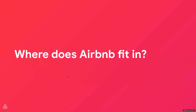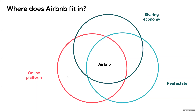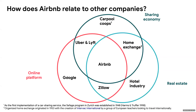Where does Airbnb fit in? I think of Airbnb sitting at the intersection of a few interesting circles: online platforms, the sharing economy, and real estate. A behemoth in the online platform circle is Google. The intersection between sharing economy and online platforms encompasses companies like Uber and Lyft. The intersection between real estate and online platforms includes companies like Zillow or Compass. I'll talk about the different challenges that arise for data scientists at these intersections.